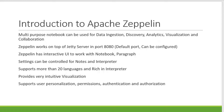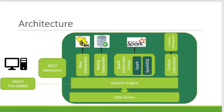Let us have a high-level understanding of the architecture of Apache Zeppelin. Zeppelin runs on top of Jetty server, which is a web application that provides a UI on port 8080. The Zeppelin engine runs on top of Jetty server and provides a REST API for other systems to interact with as well.